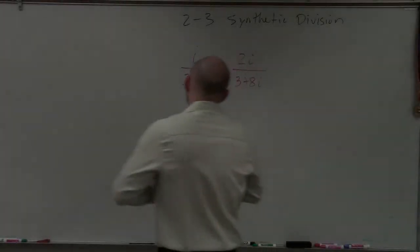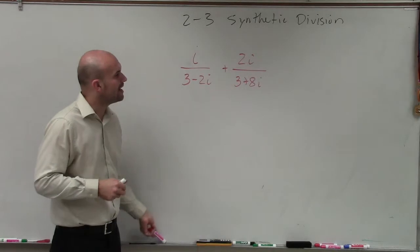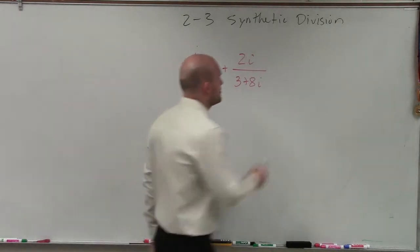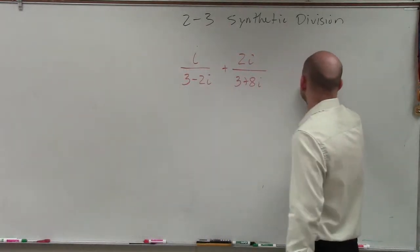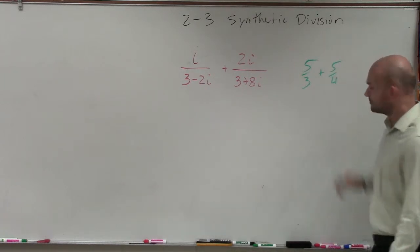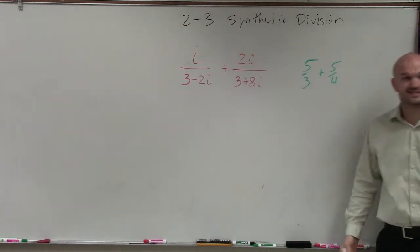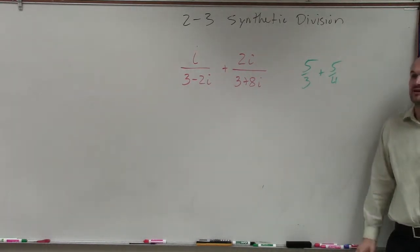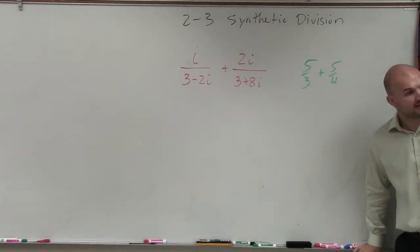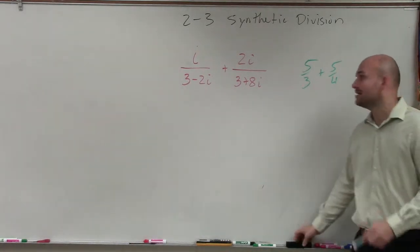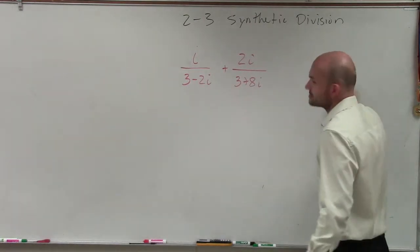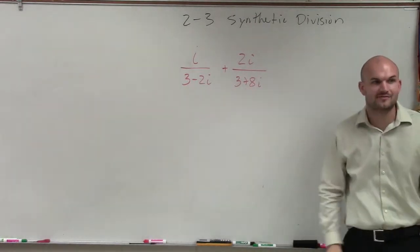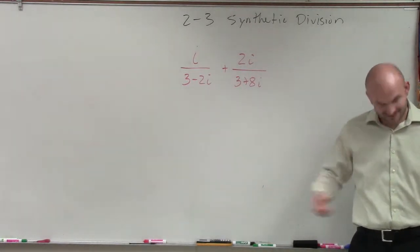We have i divided by 3 minus 2i plus 2i divided by 3 plus 8i. So I'm looking at a problem like this. Let's look at this fraction real quick. If I was going to give you these two fractions and said add, what do you have to make sure you have? You have to make sure you have common denominators, right? It doesn't matter how crazy this looks. If I'm going to add these, I have to make sure they have common denominators.